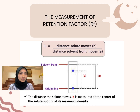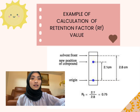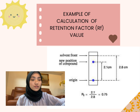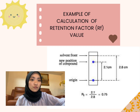The measurement of retention factor, or RF value: the formula for RF value is the distance the solute moves divided by the distance the solvent front moves. The distance the solute moves is measured at the center of the solute spot or at its maximum density. All distances are measured from the origin line. For example, if the distance the solute moves is 2.1 cm and the distance the solvent front moves is 2.8 cm, then RF = 2.1 ÷ 2.8 = 0.75.